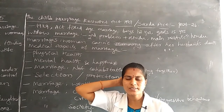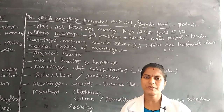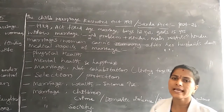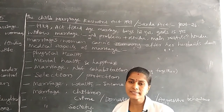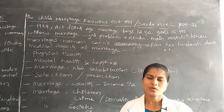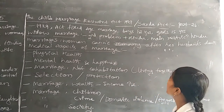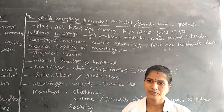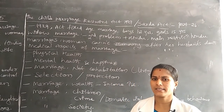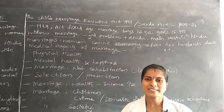In part 26, we are going to discuss about the family topic in the sociology subject for GNM first year students. We are going to discuss about the Child Marriage Restraint Act. The Child Marriage Restraint Act was started in the year 1929. It is also called as the Sarda Act. The Sarda Act is also called as the Child Marriage Restraint Act.